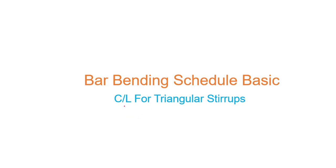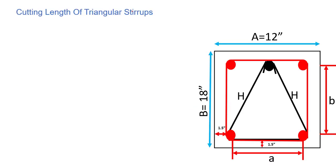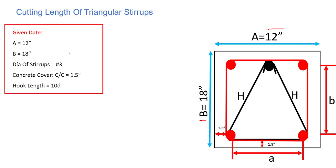In this tutorial we are going to find out the cut length of a triangular strip. Here we have a column detail — the cross section of our column size is 18 inch by 12 inch. The given data: a is 12 inch, b is 18 inch.